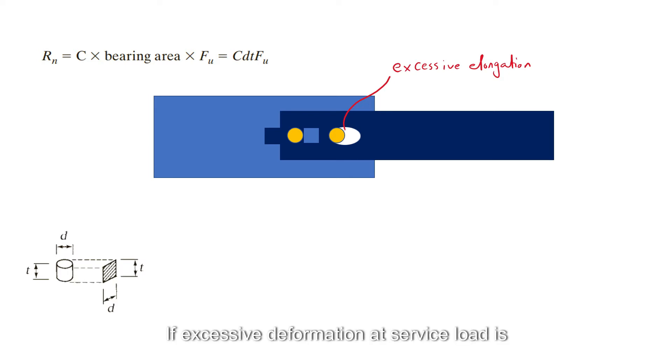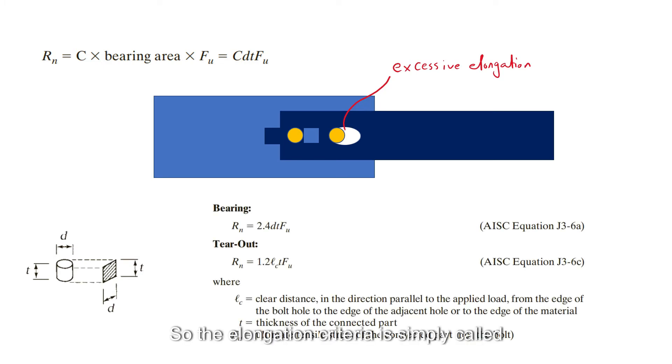If excessive deformation at service load is a concern, and it usually is, C is taken as 2.4. This value corresponds to a hole elongation of about 1/4 inches. Although both bearing and tear-out limit states result from bearing, the AISC specification classifies them as follows. So, the elongation criteria is simply called bearing, and shear tear-out due to excessive bearing is simply called tear-out, and they are evaluated as shown.